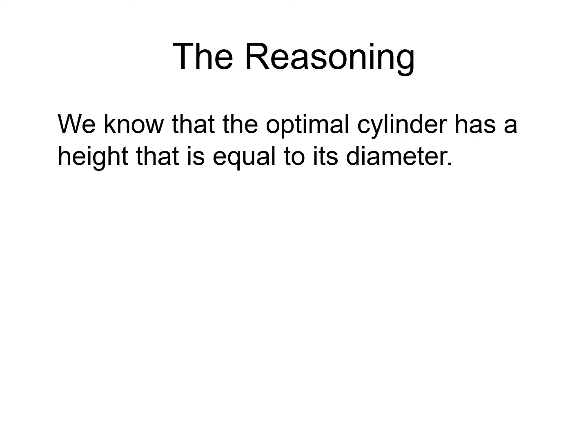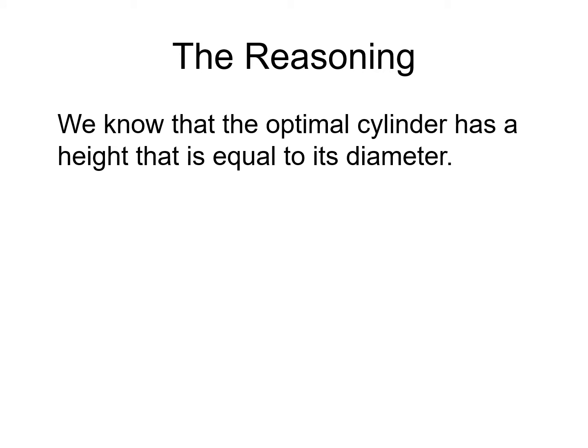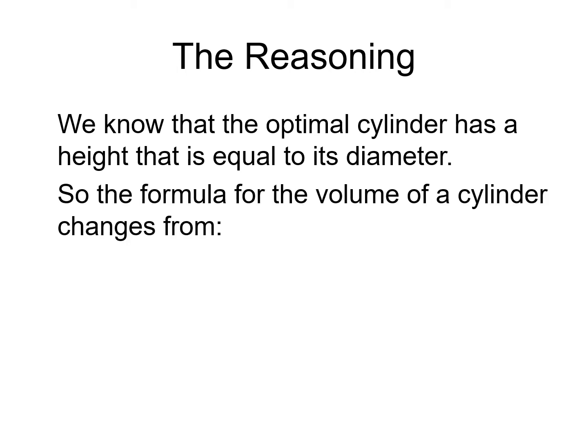The Reasoning: We know that the optimal cylinder has a height that is equal to its diameter. So the formula for the volume of a cylinder changes from V = πr²h to V = 2πr³.